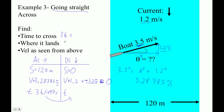Where does it land? Well, straight across. If the velocity seen from above is just this, it simply appears to move pointed upstream. But the motion of the boat is that it goes all the way straight across to that side. And that's it.